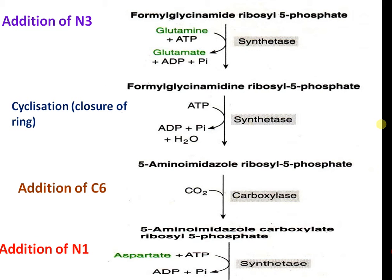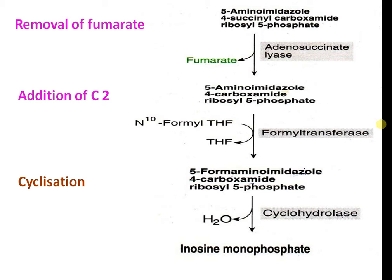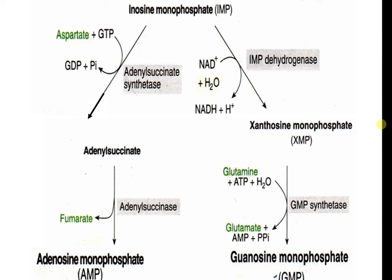Further steps include addition of N3 and cyclization, addition of C6, and addition of N1. Then removal of fumarate, addition of C2, and cyclization by cyclohydrolase to form inosine monophosphate. IMP is then divided into xanthine monophosphate and adenylsuccinate. Adenylsuccinate uses GTP to GDP, releasing inorganic phosphate, and xanthine monophosphate is converted to guanosine monophosphate, while adenosine monophosphate is formed via adenylosuccinate.